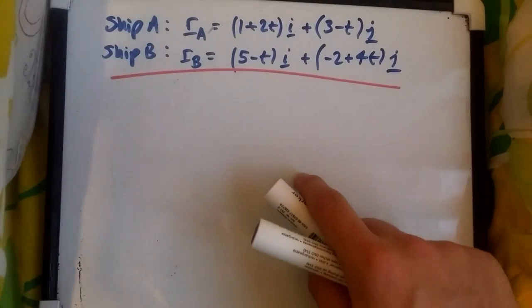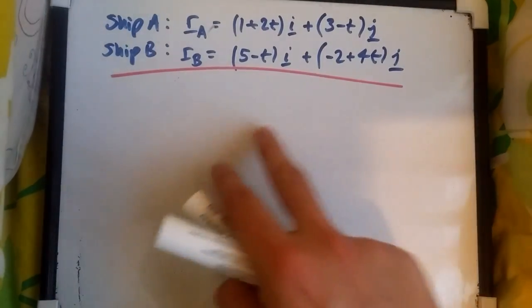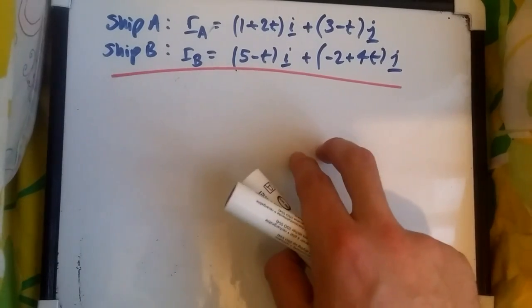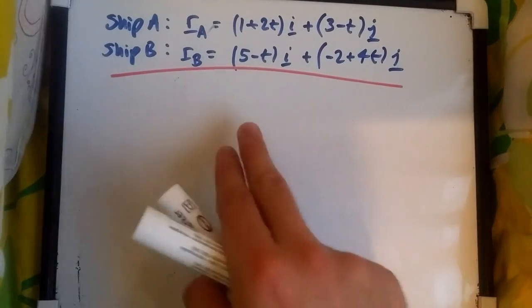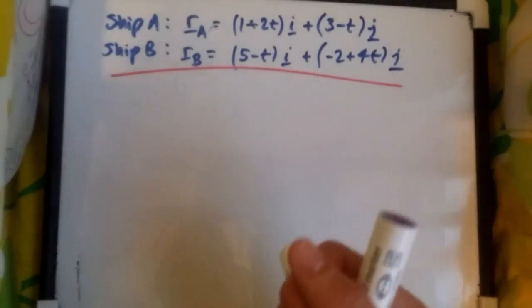Welcome back to another video on vectors. In this one, I'll be explaining how two ships can avoid collision and how to prove that they do not collide, or even to show how they can collide.